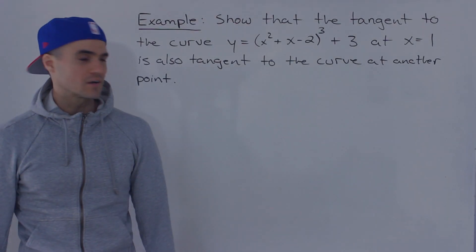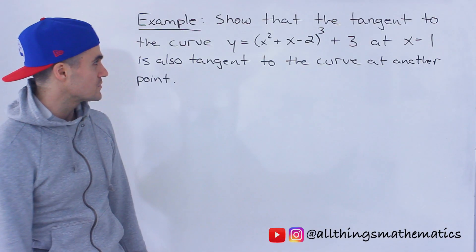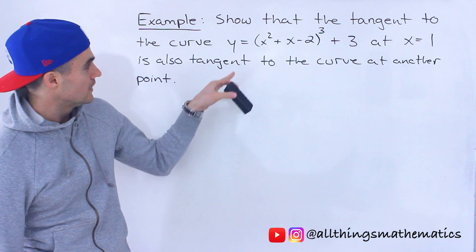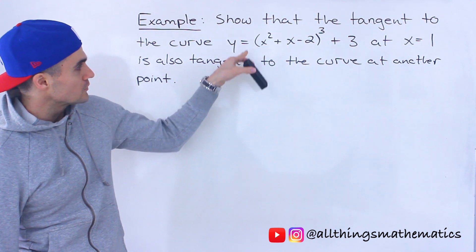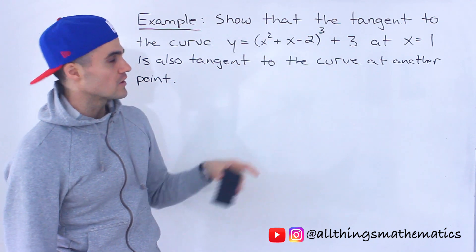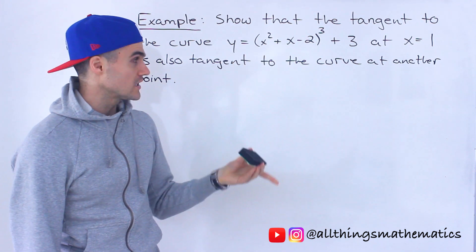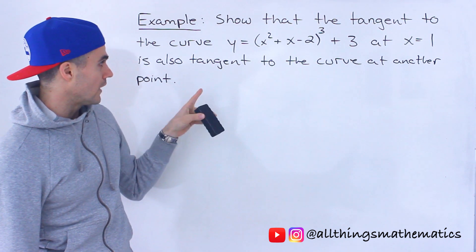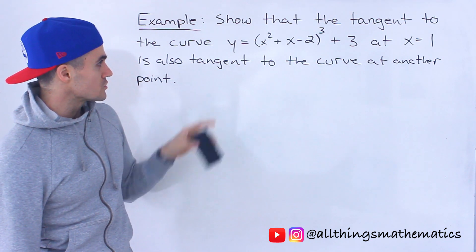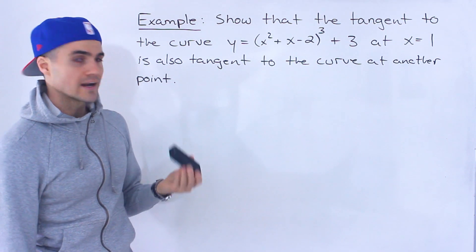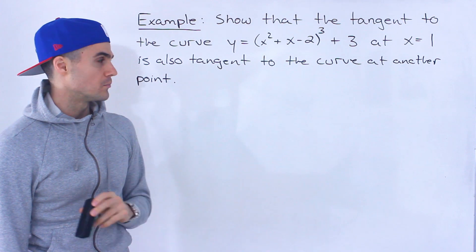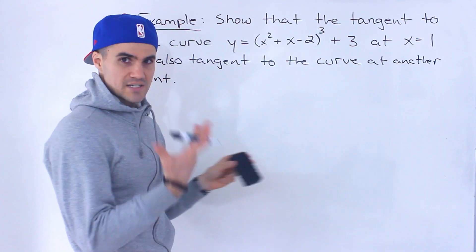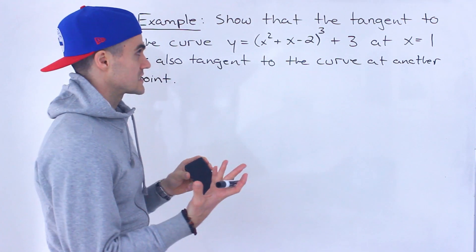What's up everyone, Patrick here. Welcome back. Moving on to the next question. We have to show that the tangent to the curve y equals (x squared plus x minus 2) to the power of 3 plus 3 at an x value of 1 is also tangent to the curve at another point. I'm going to do this in a series of steps.